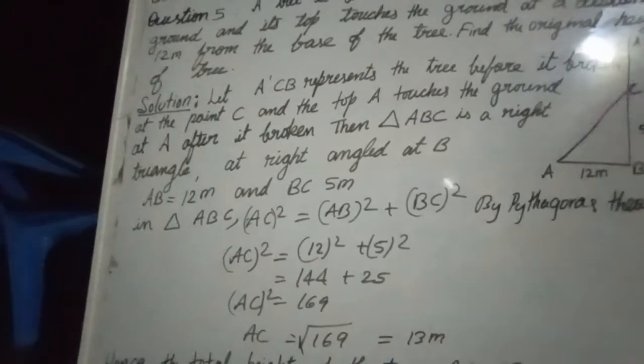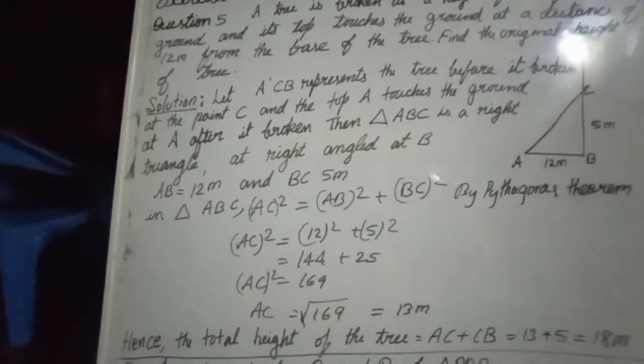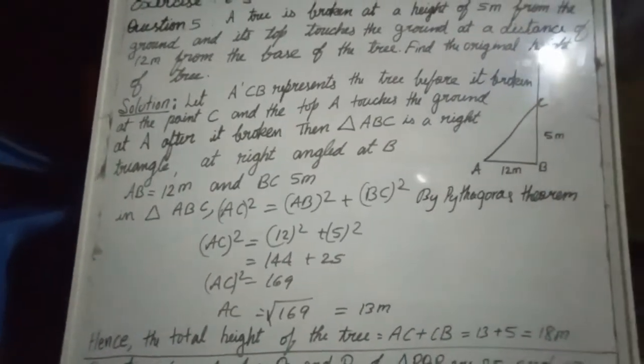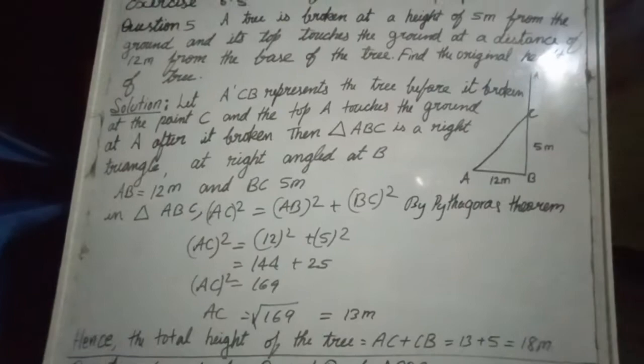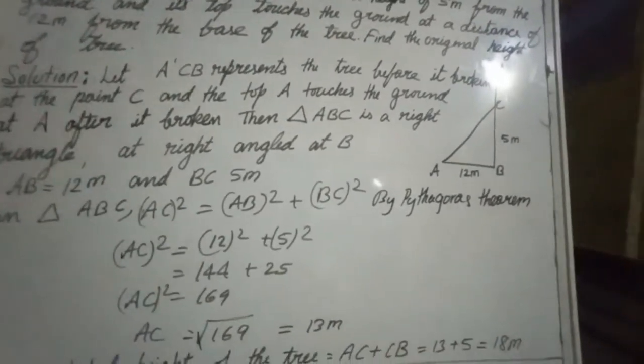So you are going to get 13 meter. But they ask the question, height of the tree. Hence, the total height of the tree is AC plus CB is equal to 13 plus 5.